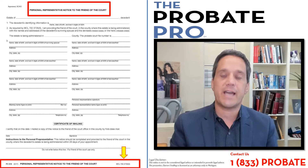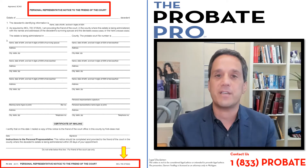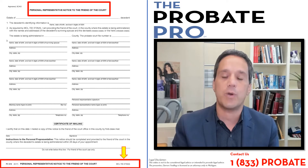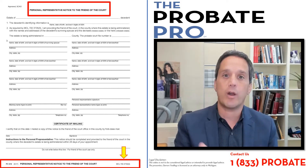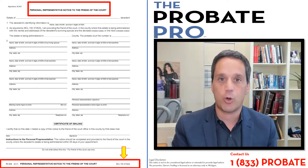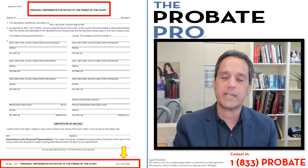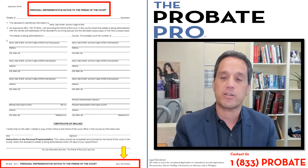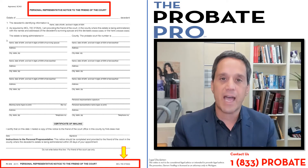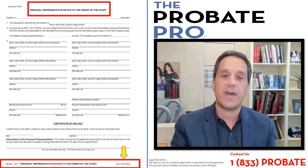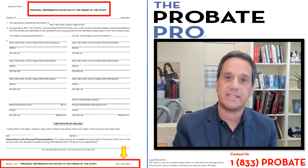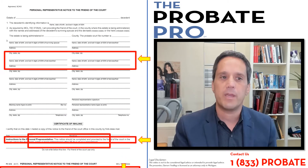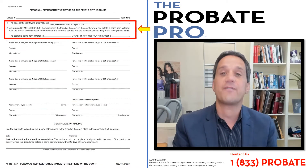This particular statute incorporates lots of the different noticing requirements that the personal representative must do on behalf of the interested parties — or in this particular case, the Friend of the Court. The personal representative must provide notice to the Friend of the Court within 14 days to notify them of the commencement of that deceased estate.